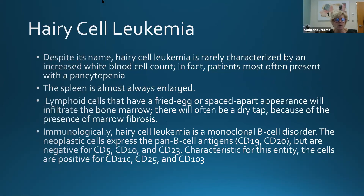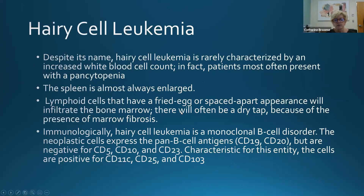Hairy cell leukemia, unlike other leukemias, rarely has an increased white blood cell count — almost all patients present with pancytopenia and nearly always have splenomegaly. On bone marrow biopsy, cells have a characteristic fried egg appearance with clear space around them. Dry taps are common due to fibrosis. Immunophenotype: B cells, CD19 and CD20 positive, negative for CD5, CD10, and CD23, but positive for CD25 and CD103.